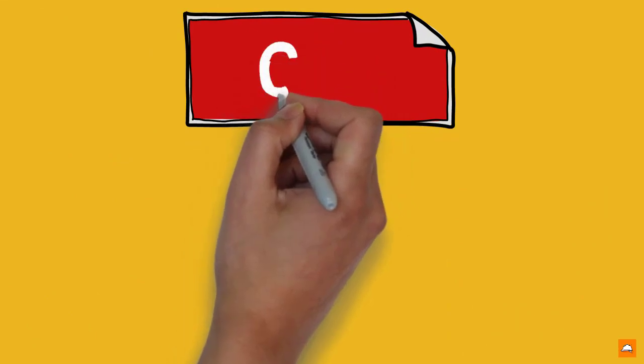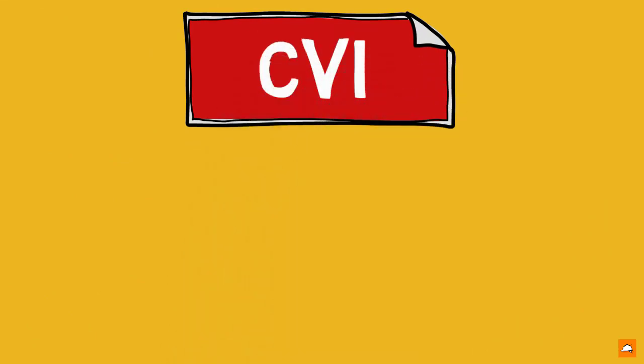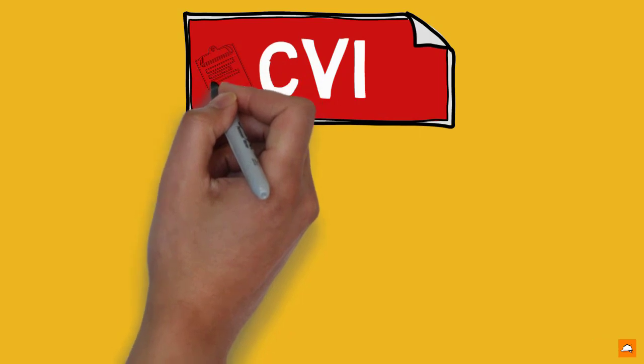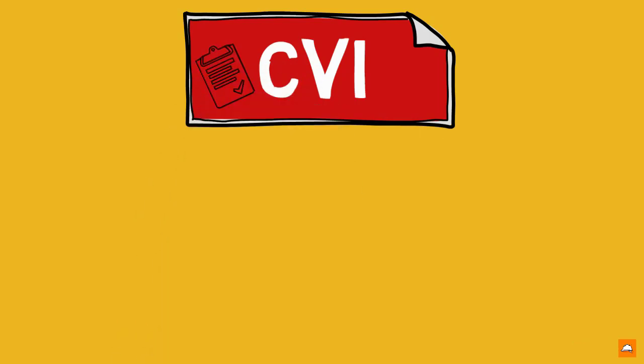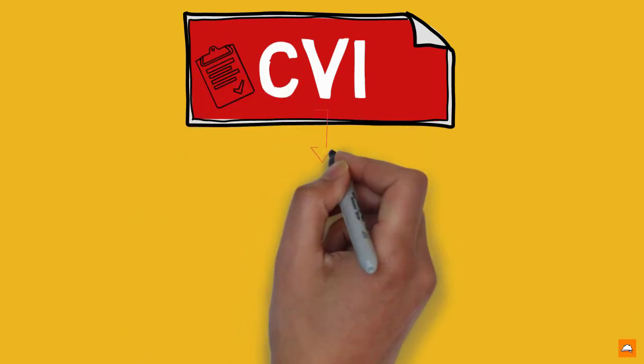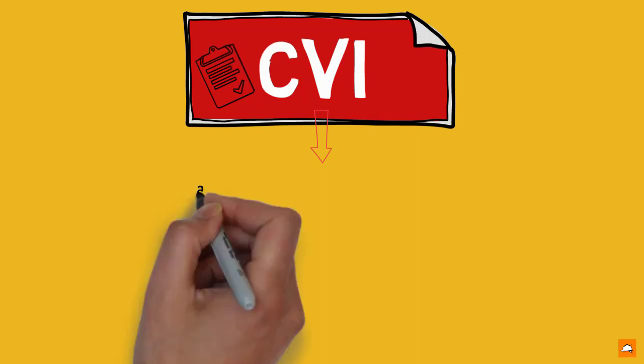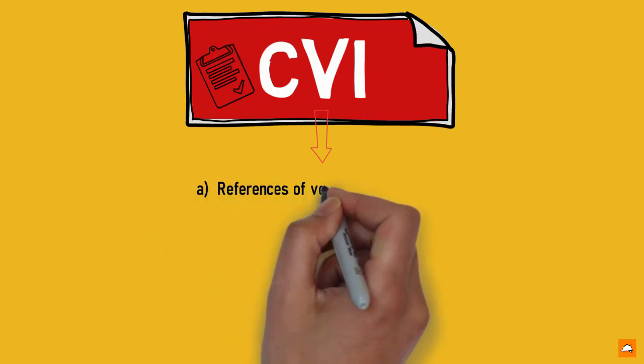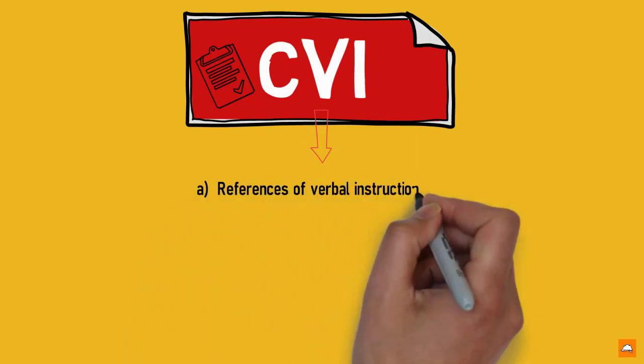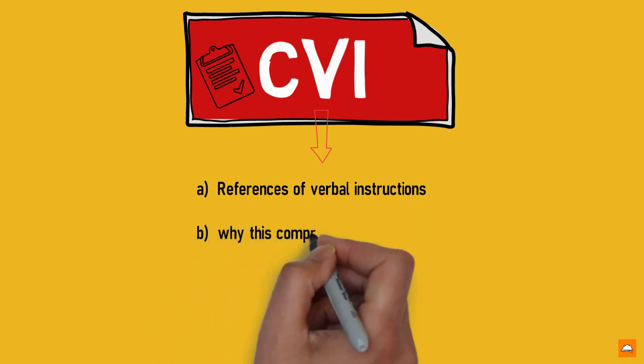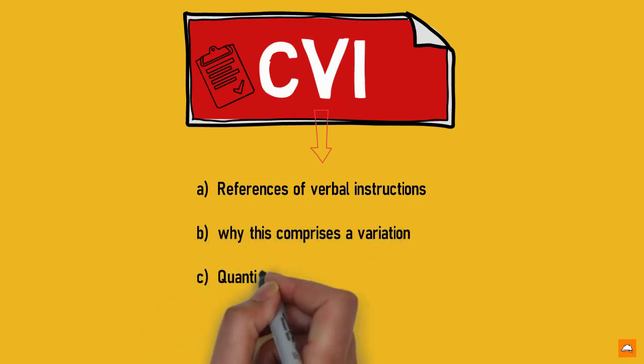Kasun could request the engineer to formalize his verbal instructions by raising a confirmation of verbal instructions, commonly termed as CVI form. So, let's see what goes into a CVI form. References of verbal instructions has to be included in the CVI. Demonstration on why this comprises a variation. Ideally, the contract provision.